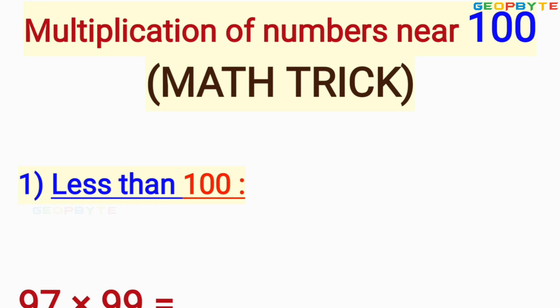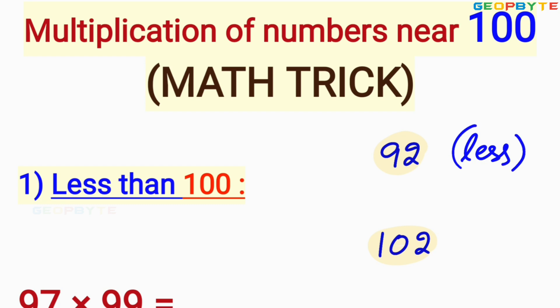A number which is less than 100 — for example 92 — and a number like 102, these two numbers are close to 100, but 92 is less than 100 and 102 is more than 100. We are going to discuss one trick for less than 100 and another trick for more than 100. With that primary information, first let us take the less than 100 case.